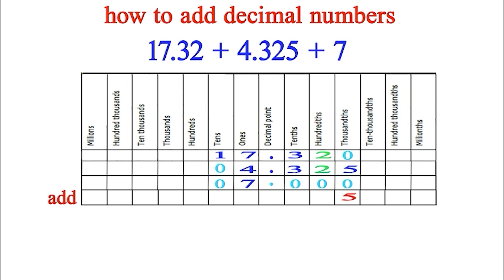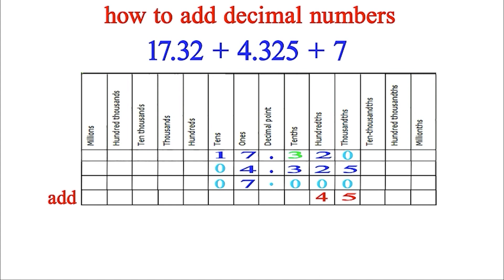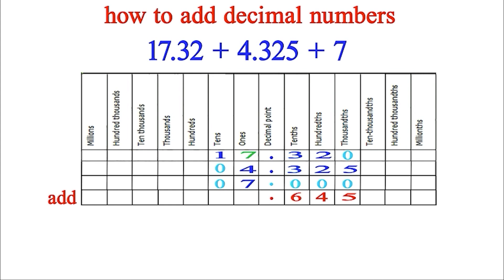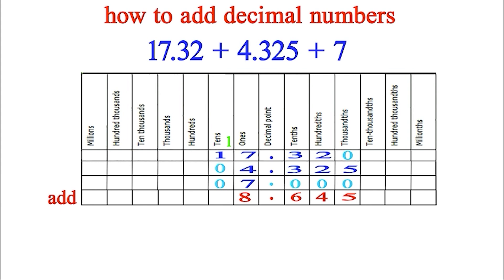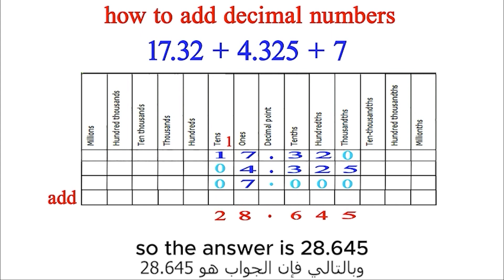2 plus 2 plus 0 equals 4, so put 4. 3 plus 3 plus 0 equals 6, so put 6. Put the dot. 7 plus 4 plus 7 equals 18 — as we do in natural numbers, put 1 up and 8 down. 1 plus 1 plus 0 equals 2, so put 2. So the answer is 28.645.